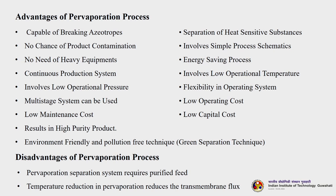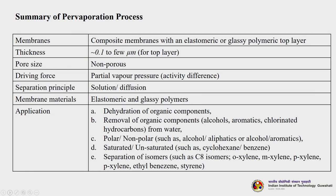Advantages of pervaporation: capable of breaking azeotropes, no chance of product contamination, no need for heavy equipment, continuous production system, involves low operational pressure, multi-stress system can be used, low maintenance cost, results in high purity product, environment friendly and pollution free, separation of heat-sensitive substances, simple process schematics, energy saving, low operational temperature, flexibility in operating system, low operating cost, and low capital cost. Disadvantages: pervaporation requires a purified feed - if there is too much contamination it may not work. Temperature reduction in pervaporation reduces the transmembrane flux. Since both heat and mass transfer appear simultaneously, it is a complex system.